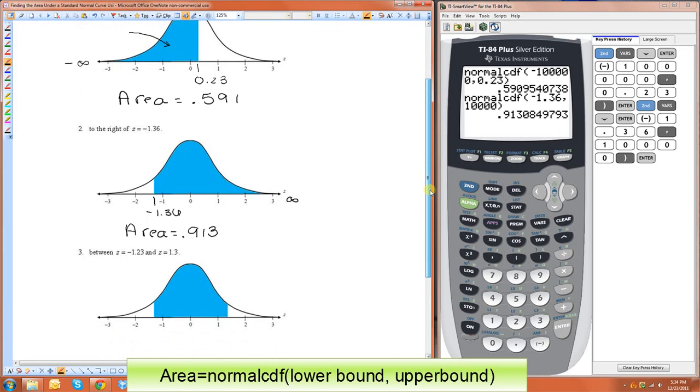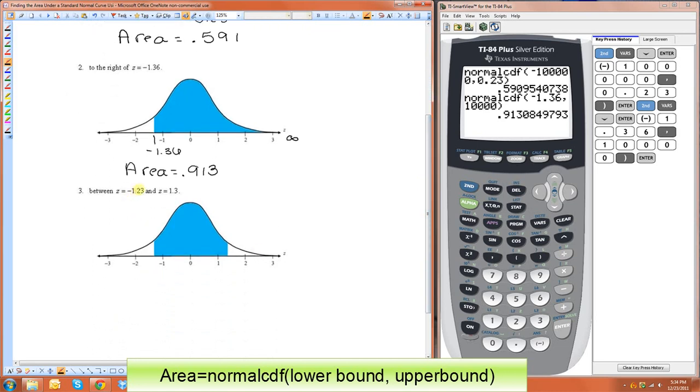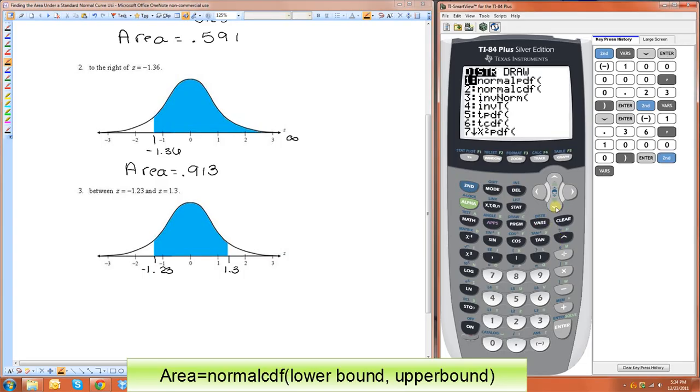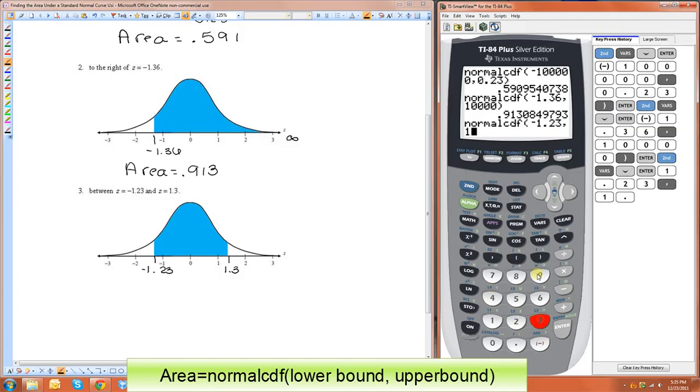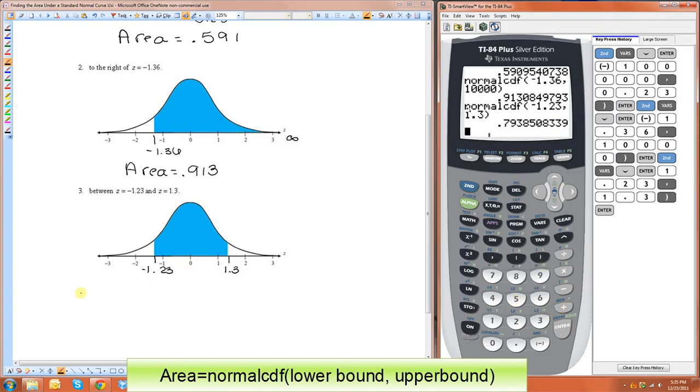In this one, we want to know between negative 1.23 and 1.3. So this is negative 1.23, and this is positive 1.3. So this one's actually easier because all you need to do is just put those two numbers into the normal cdf function. You do negative 1.23 comma 1.3. So that means the area is equal to 0.794.